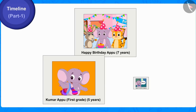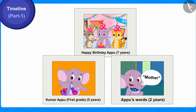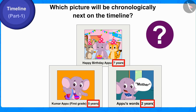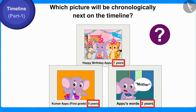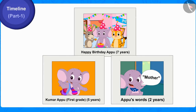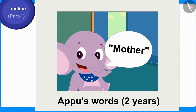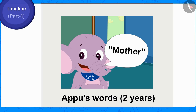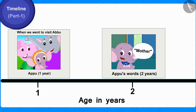Now, can you tell which picture's age will be chronologically next on the timeline? Well done, children, you have found the correct answer! The picture in which Appu was two years old will be shown chronologically next on the timeline, by writing 'two years' on it.